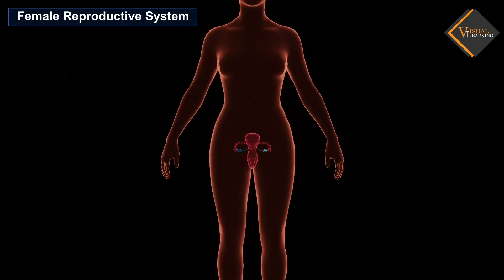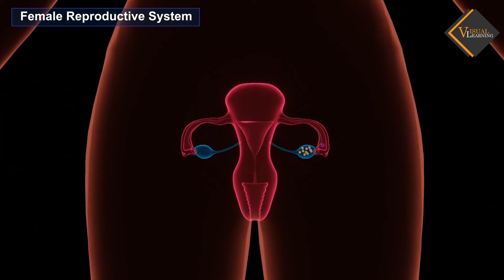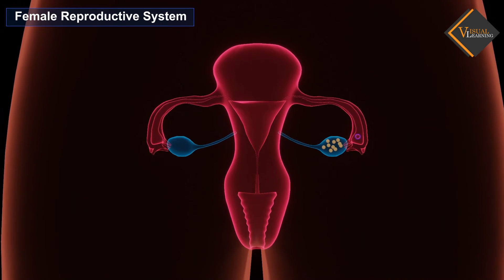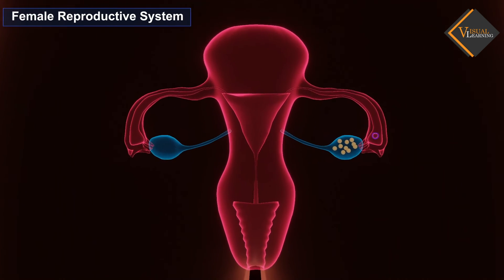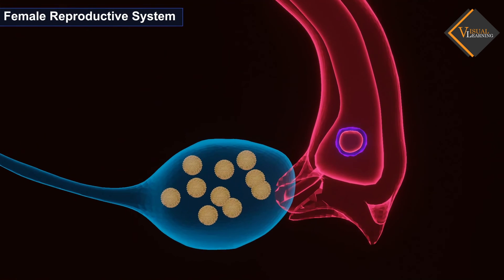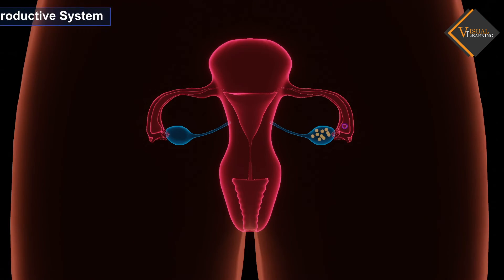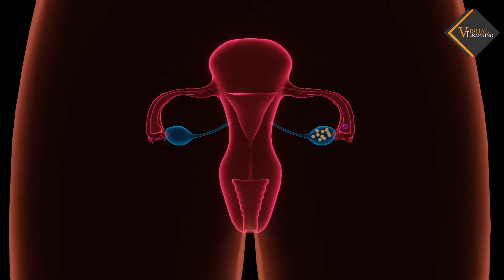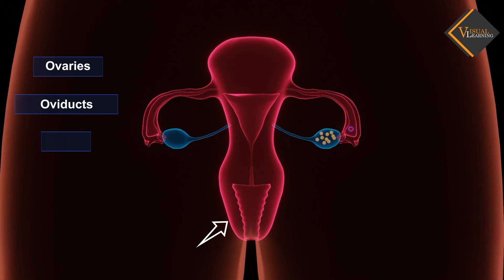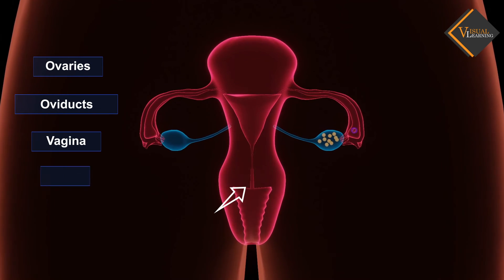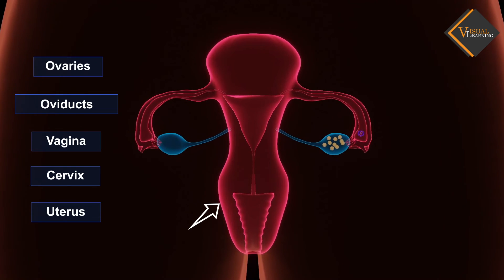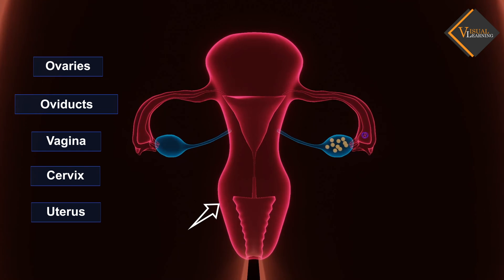The female reproductive system is framed to perform different functions. It creates egg cells that are essential for reproduction, known as ova. The female reproductive system is composed of a pair of ovaries along with oviducts, vagina, cervix, uterus, and the external genitalia that are located in the pelvic region.